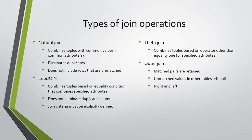Rows that cannot be matched do not appear in the result. The equi join operation combines relations based on an equality condition that compares specified attributes of the relations, not necessarily common attributes. In contrast to the natural join, it does not eliminate the duplicate attributes. Obviously, the equality criteria must be explicitly defined.